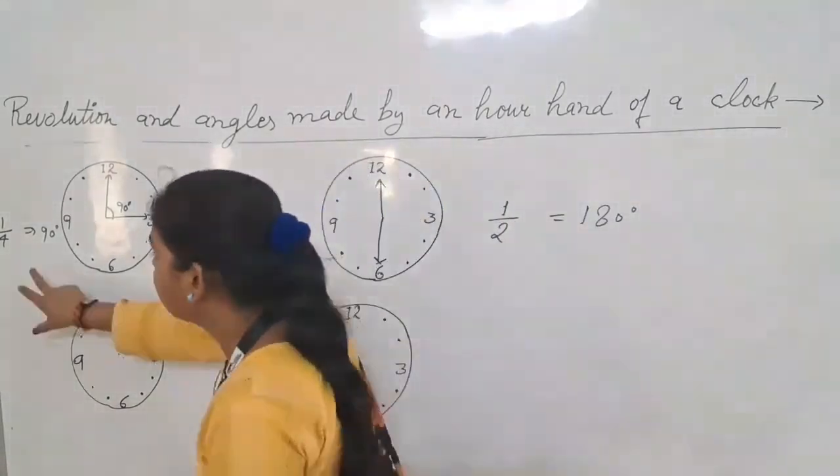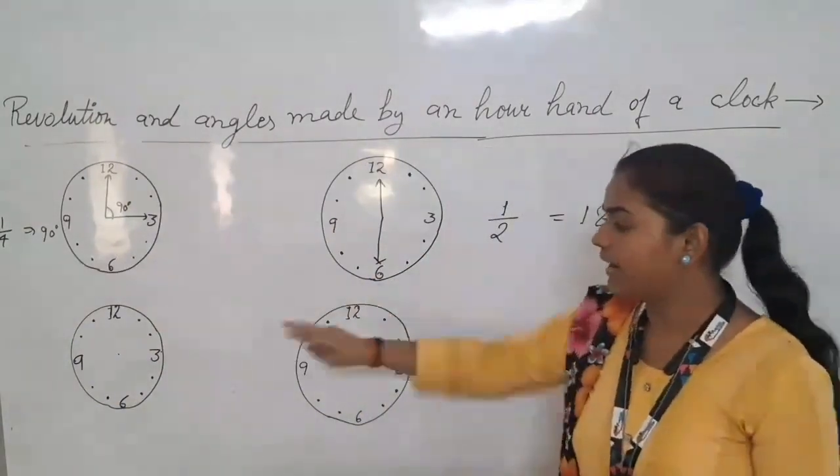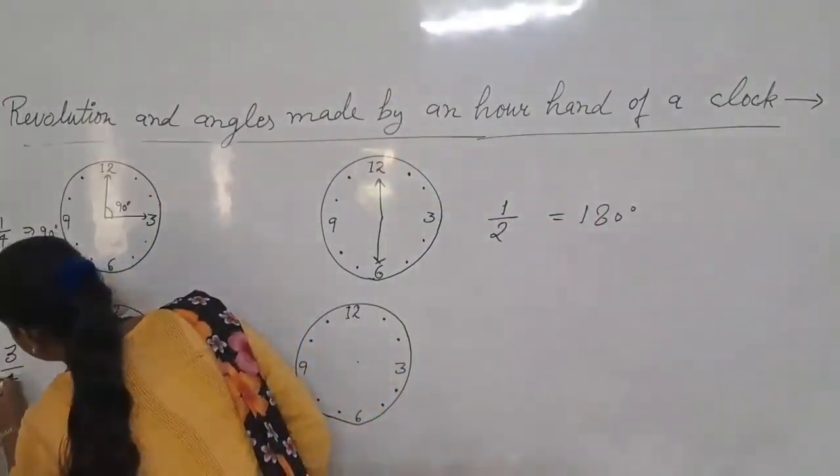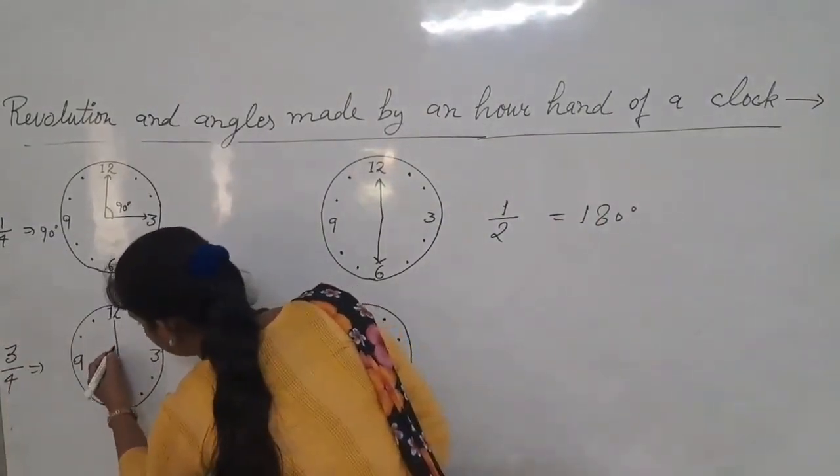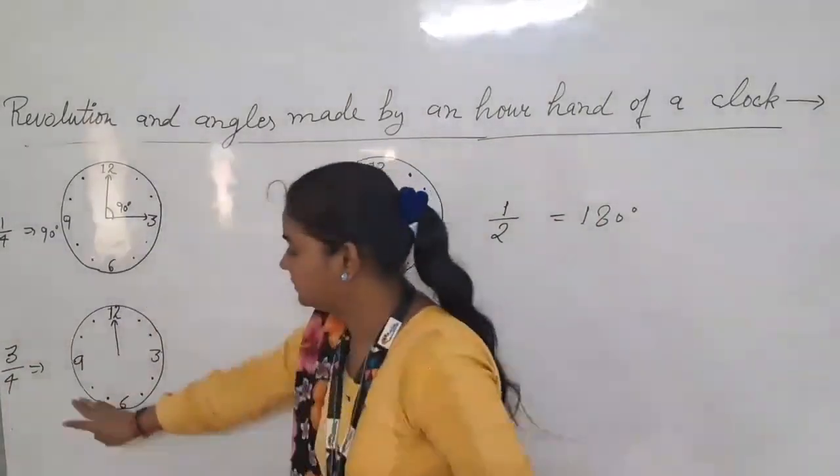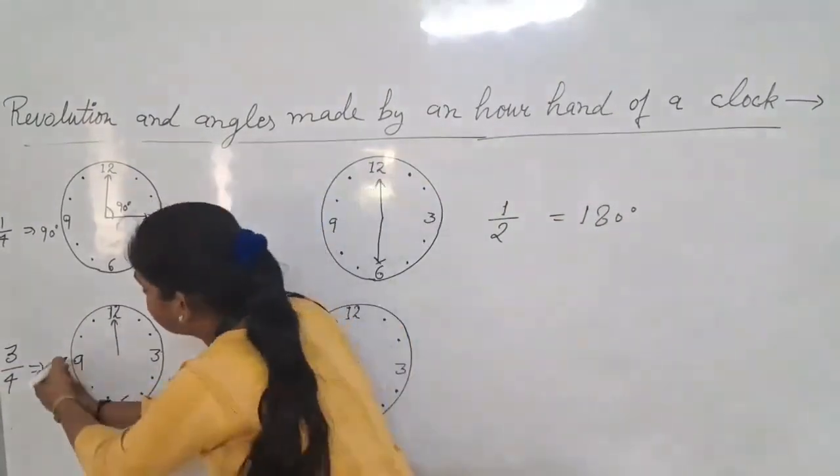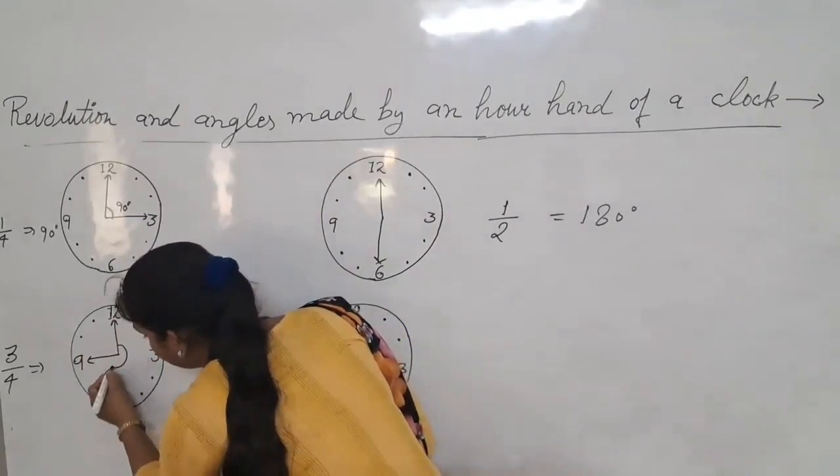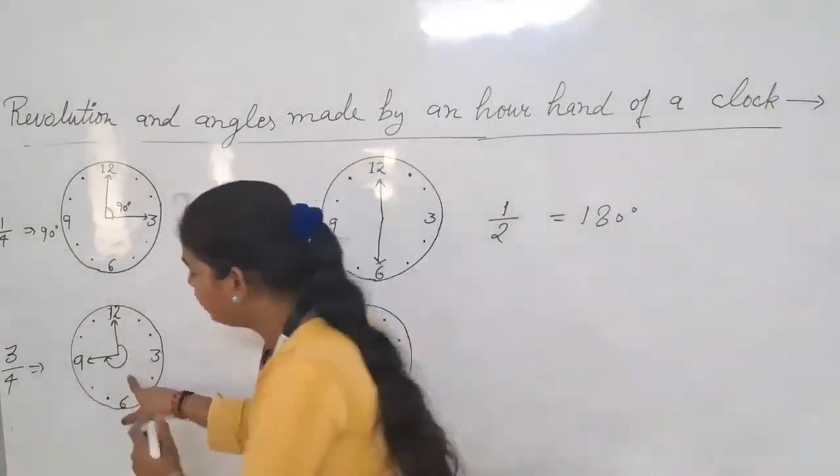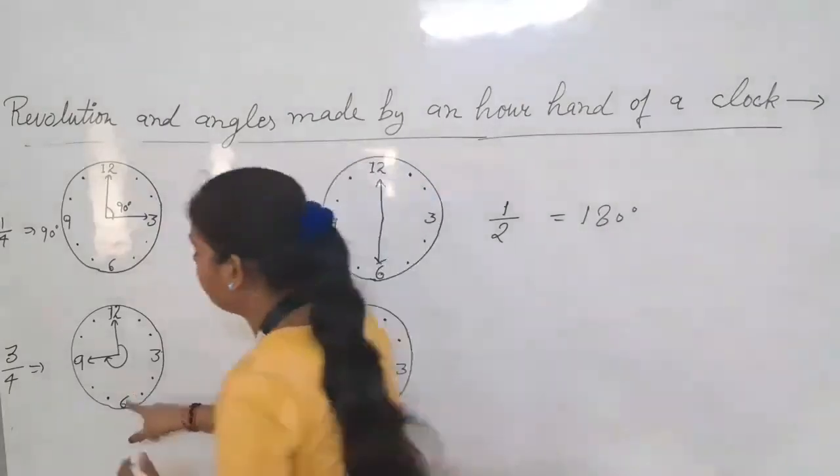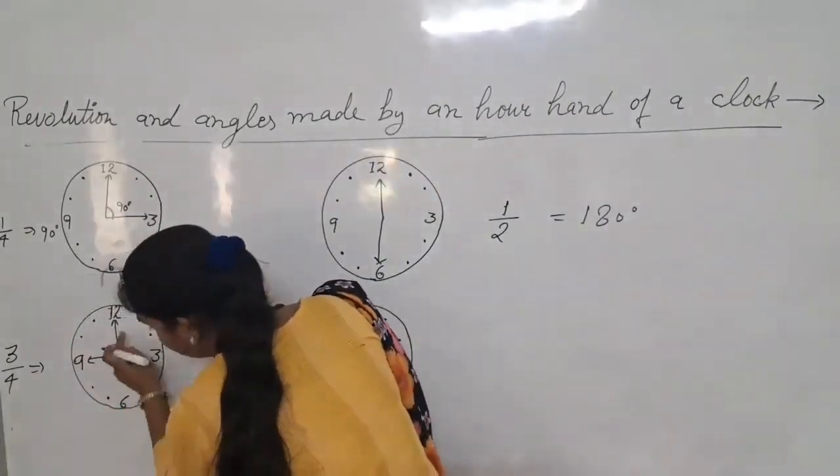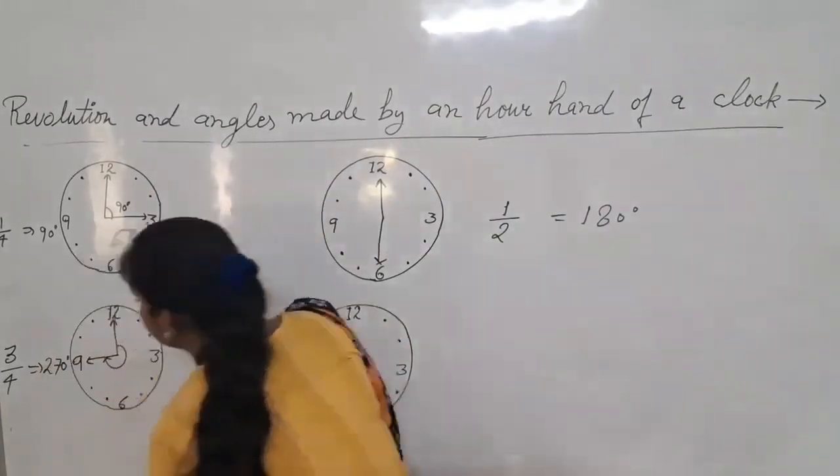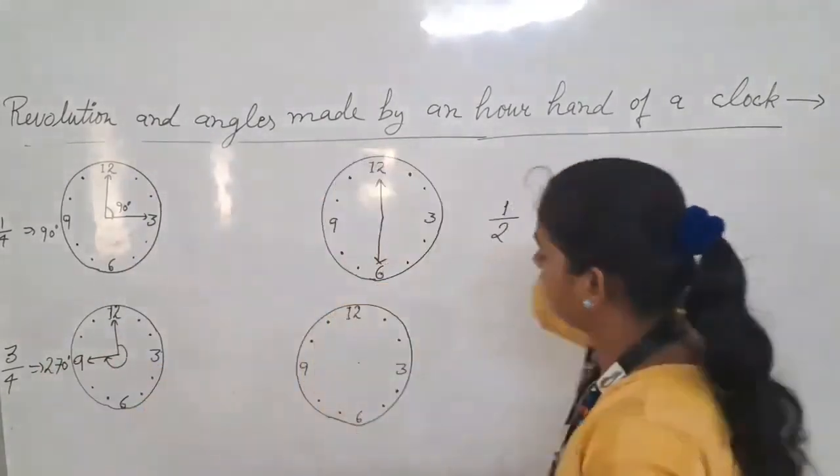Next, three fourths revolution. Three fourths revolution means north moves west. The angle is turned to 270 degrees. 90 plus 180 equals 270 degrees.